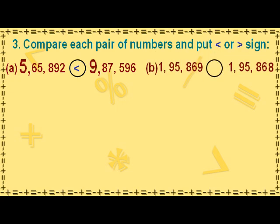The first five digits 1, 9, 5, 8 and 6 have the same place values in both numbers. The digit 9 in the ones place value in the first number is greater than 8 in the ones place value in the second number. Hence, the first number is greater than the second number, so we put the greater than sign after the first number.